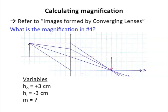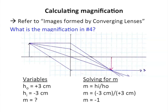Calculating magnification. For the following examples, refer to the document called Images Formed by Converging Lenses, which you probably did for homework recently. We're going to start with number 4 on the back side of that sheet. Listing our variables: object height is positive 3 because it's upright, image height is negative 3 because it's inverted. Substituting into the equation, magnification equals negative 3 centimeters over positive 3 centimeters, which comes out to be negative 1.